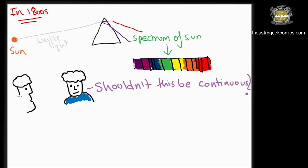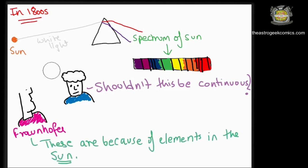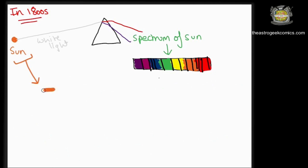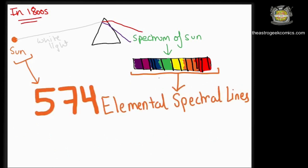It was Fraunhofer who found out that these were the absorption lines of the elements that make up the sun. In total, he found 574 absorption lines in the spectrum. Even today, some of these lines are not accounted for and might belong to the much higher excited states of elements.